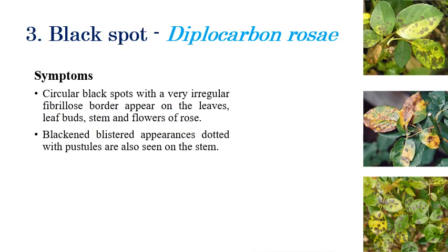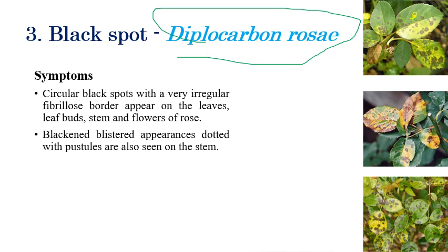Black spot is caused by Diplocarpon rosae. Dirty black color spots can be seen on leaves, visible in three images here. Small spots appear initially, then coalesce and cover the entire plant, looking very dirty. In later stages, large black spots with blister-like or dotted appearance, resembling anthracnose, can be observed.